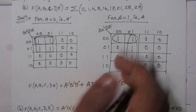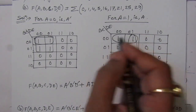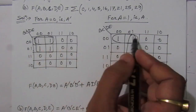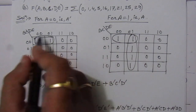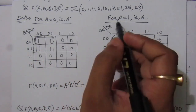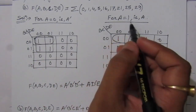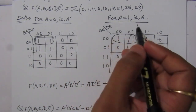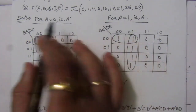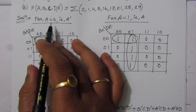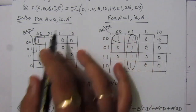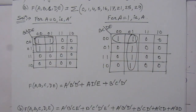We have to check for common terms. Here we can see that this group and this group are the same, so we can neglect A because A is transitioning from 0 to 1 or 1 to 0 — meaning A equal to 0 and A equal to 1 — so we can ignore it.